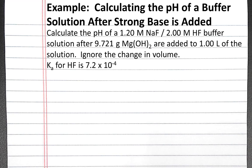In this example problem, we'll calculate the pH of a buffer solution after a strong base is added. Our buffer solution is 1.2 molar sodium fluoride and 2 molar hydrofluoric acid. We're going to add 9.721 grams of magnesium hydroxide to 1 liter of the buffer solution.